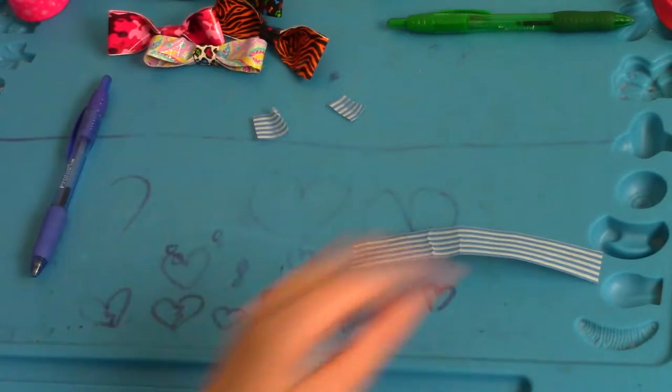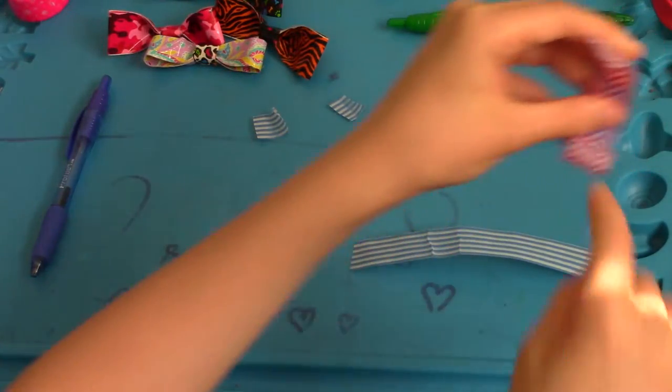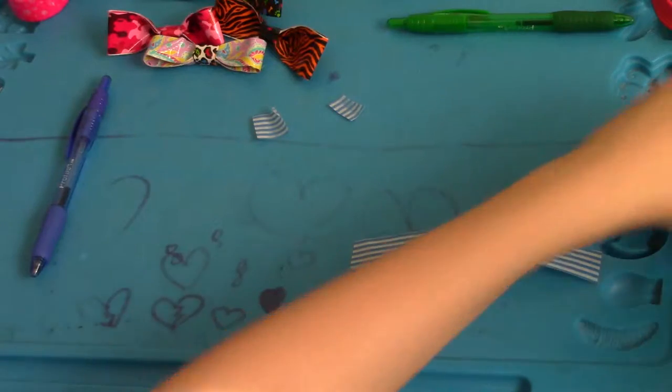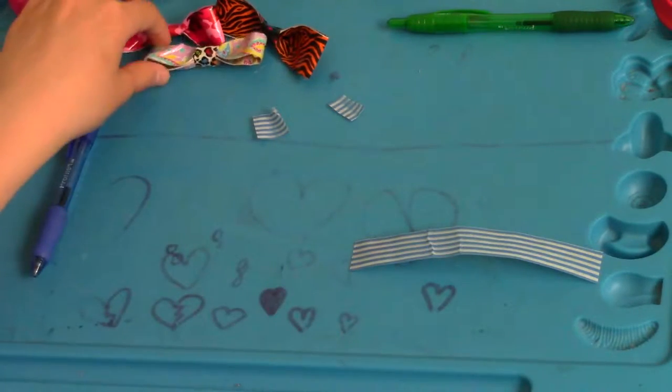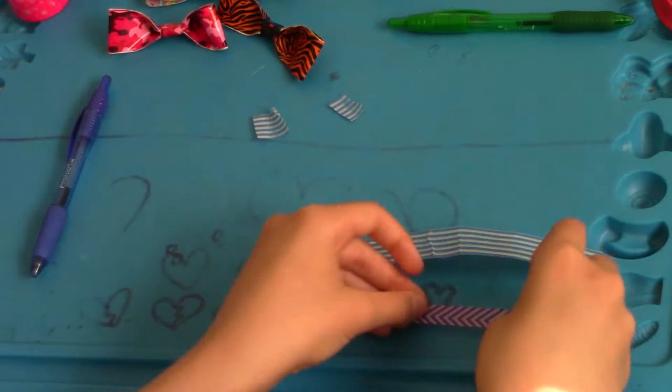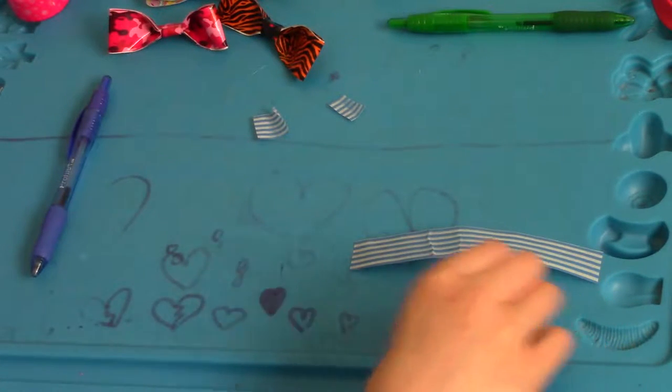You're going to want to cut it down the middle, vertically. It depends if you're doing a big bow or a small bow. Depends on the length. But, I have this, right there, which I've already cut.